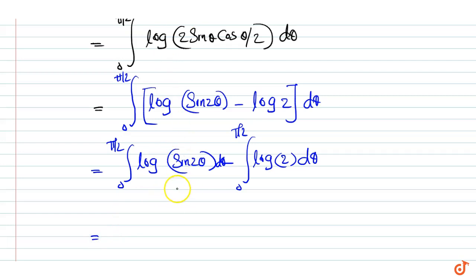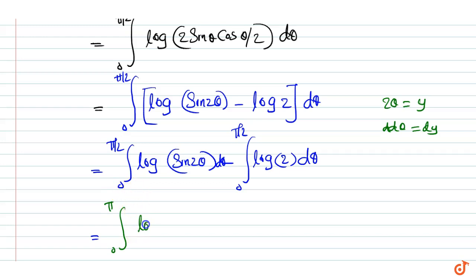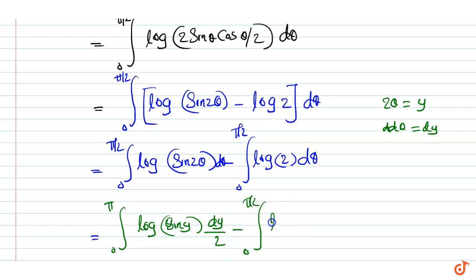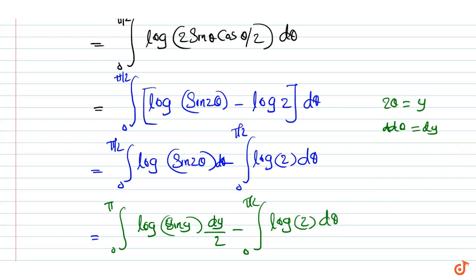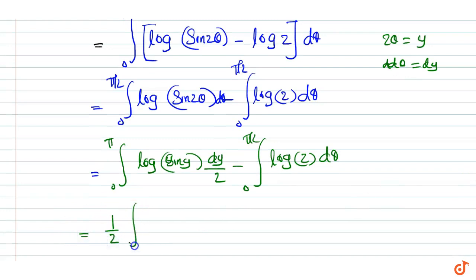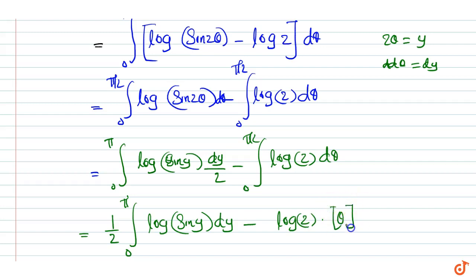This integral can be written by setting 2 theta equal to y. We get 2 d theta equal to dy. We can write the integral from 0 to pi of log(sin y) dy by 2, minus the integral from 0 to pi by 2 of log 2 d theta. This equals one half times integral from 0 to pi of log(sin y) dy, minus log 2 times theta evaluated from 0 to pi by 2.